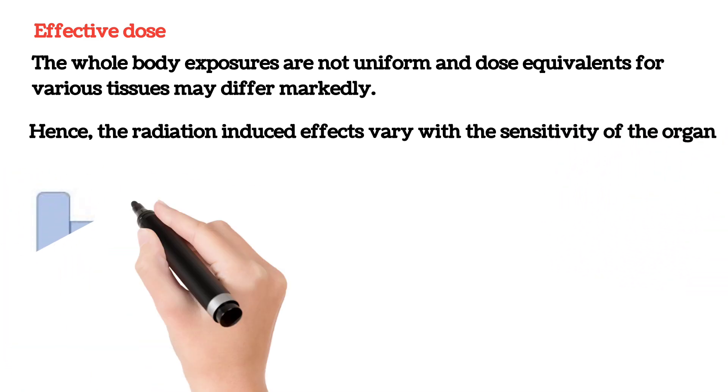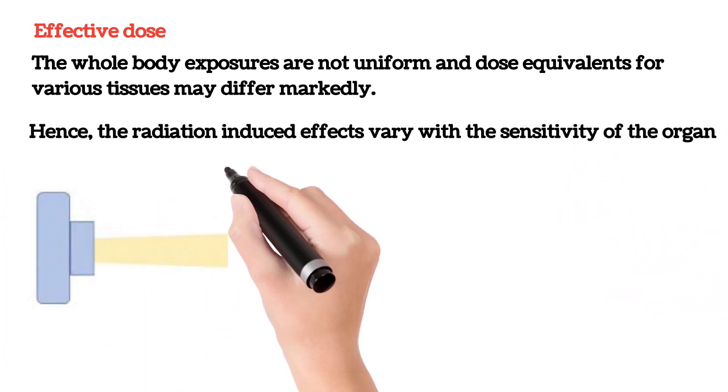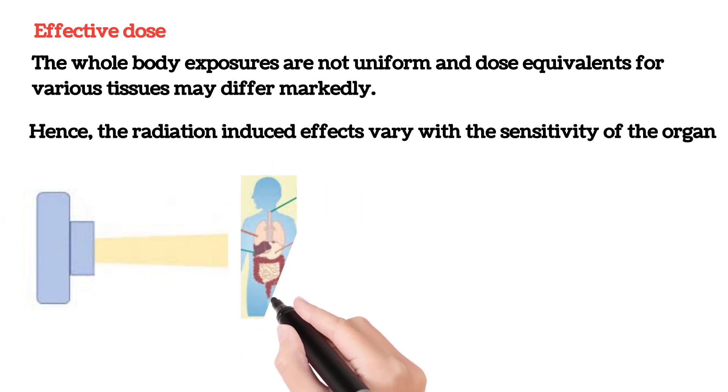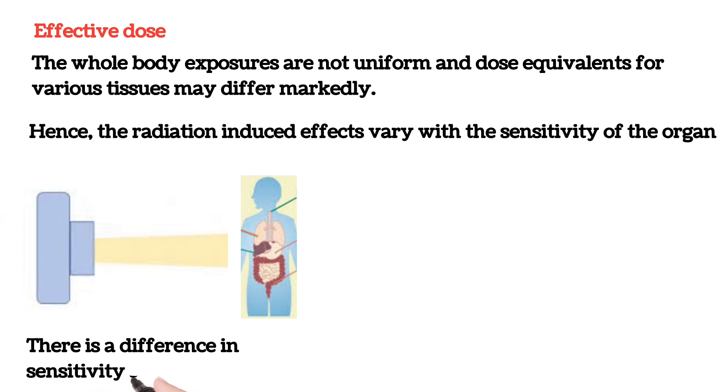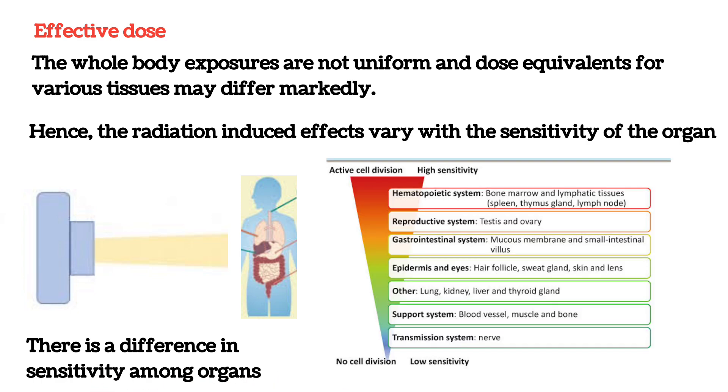When we expose the person with radiation, there is a difference in sensitivity among organs. Some organs are more sensitive, and some are less sensitive. That's why whole body exposures are not uniform.